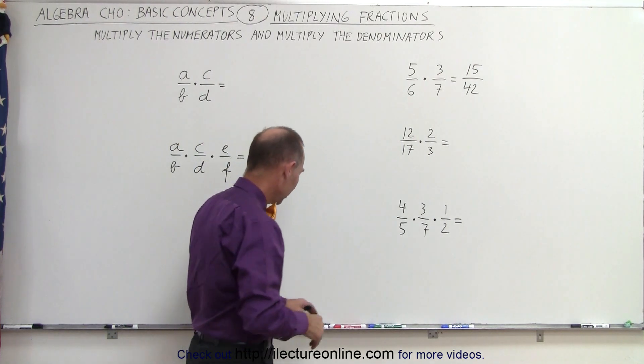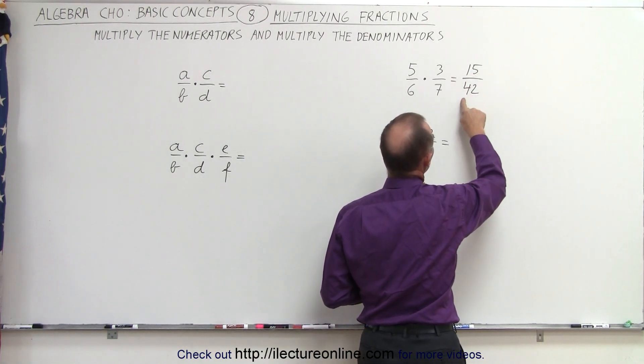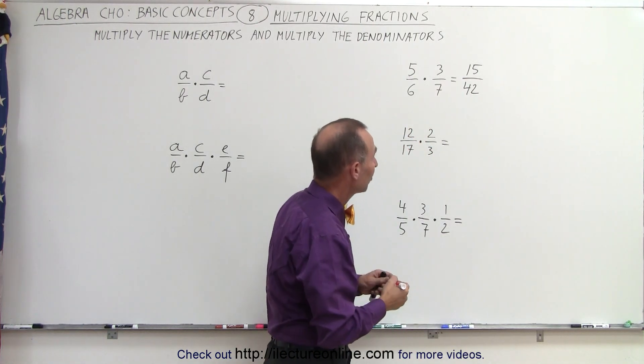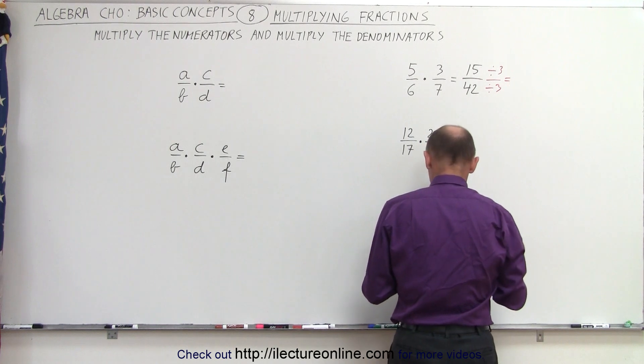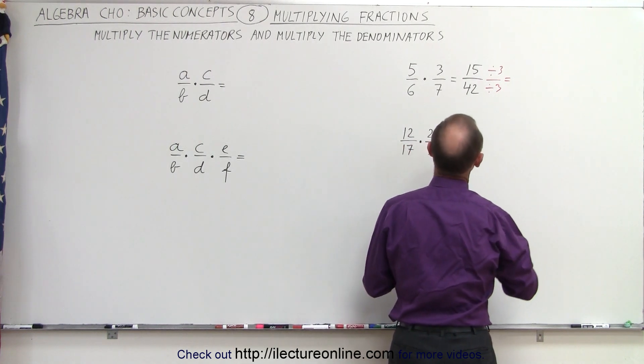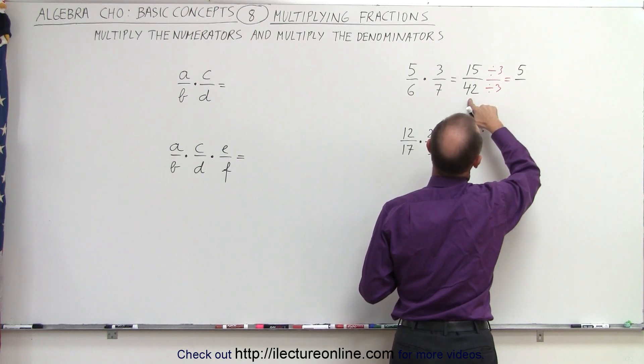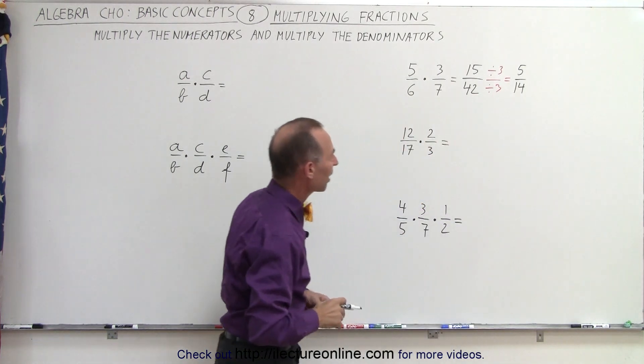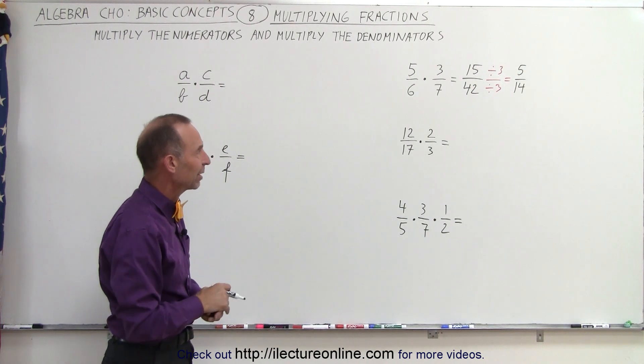In this case, when you reduce, you can see that the numerator can be divided by 3 and the denominator can be divided by 3, because 1 plus 5 is 6 and 4 plus 2 is 6. When we divide by 3, we get 5, and 3 goes into 42 which would be 14. So the end result when we multiply the two fractions together and reduce, we end up with 5 divided by 14.